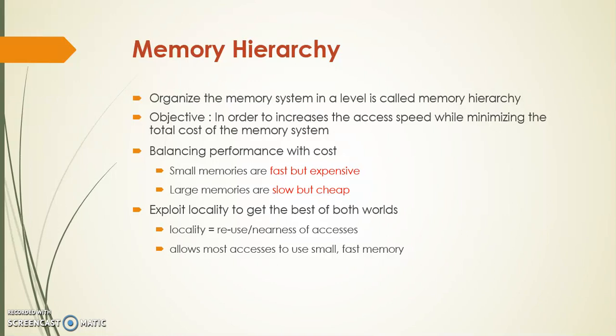For example, if you use a small memory it is very fast but expensive, whereas a large memory is slow but cheap. The example for small memory is cache memory — very fast but expensive and small in size. The example for large memory is secondary memory — very slow but very cheap. The basic principle of memory hierarchy is locality of reference, meaning reuse or nearness of access, allowing data to be accessed using small and fast memory.